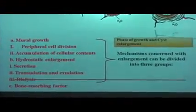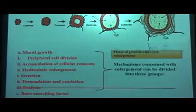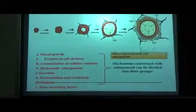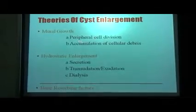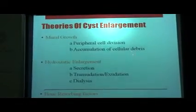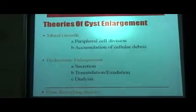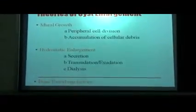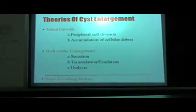Lastly, the cyst will grow and expand through three basic mechanisms: mural growth, hydrostatic enlargement, and bone-resorbing factors. Under mural growth, we have peripheral cell division and accumulation of cell debris. Under hydrostatic enlargement, we have secretion through the epithelial lining, transudation or exudation of fluid from the surrounding stroma, and dialysis. These are the three major theories which have been put forward for cyst enlargement.